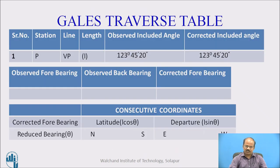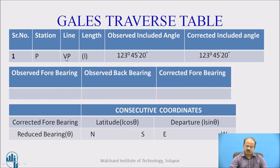As you are familiar from the earlier session, there is a standard Gales traverse table used for entering data of theodolite traverse. It consists of columns for serial number, name of the station, name of the line, length of the line, observed included angle, and corrected included angle. There are columns for observed fore bearing and back bearing, which are corrected for local attraction and using the known included angle to get corrected fore bearings. These corrected fore bearings in whole circle bearing system are then converted into reduced bearing system for the coordinate calculations.